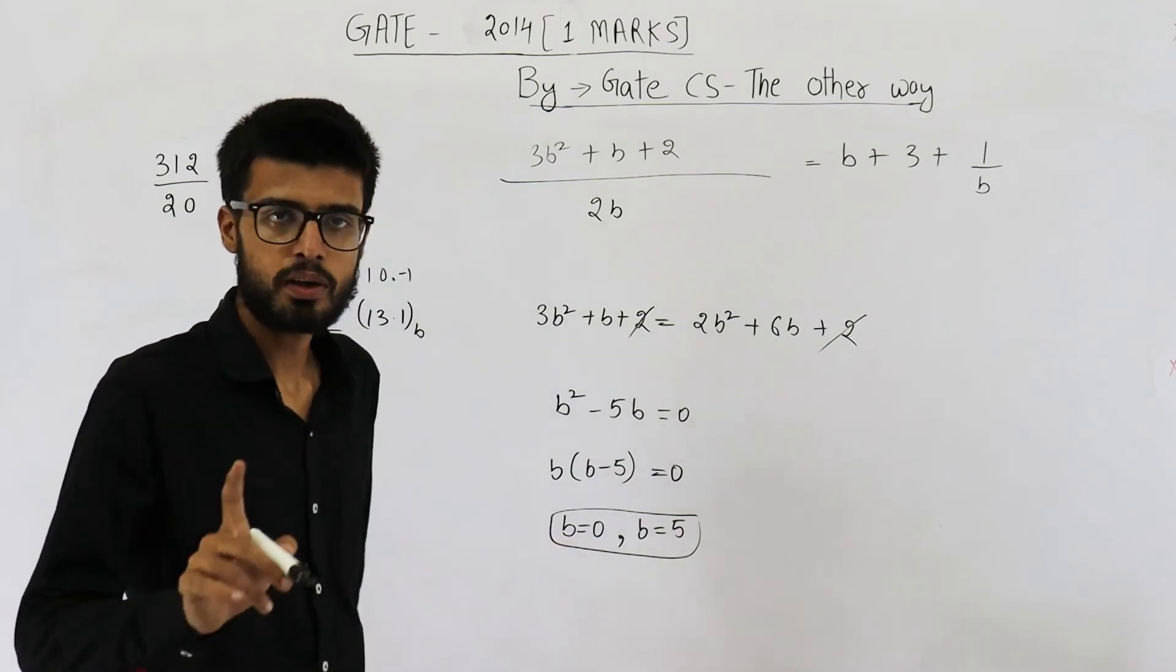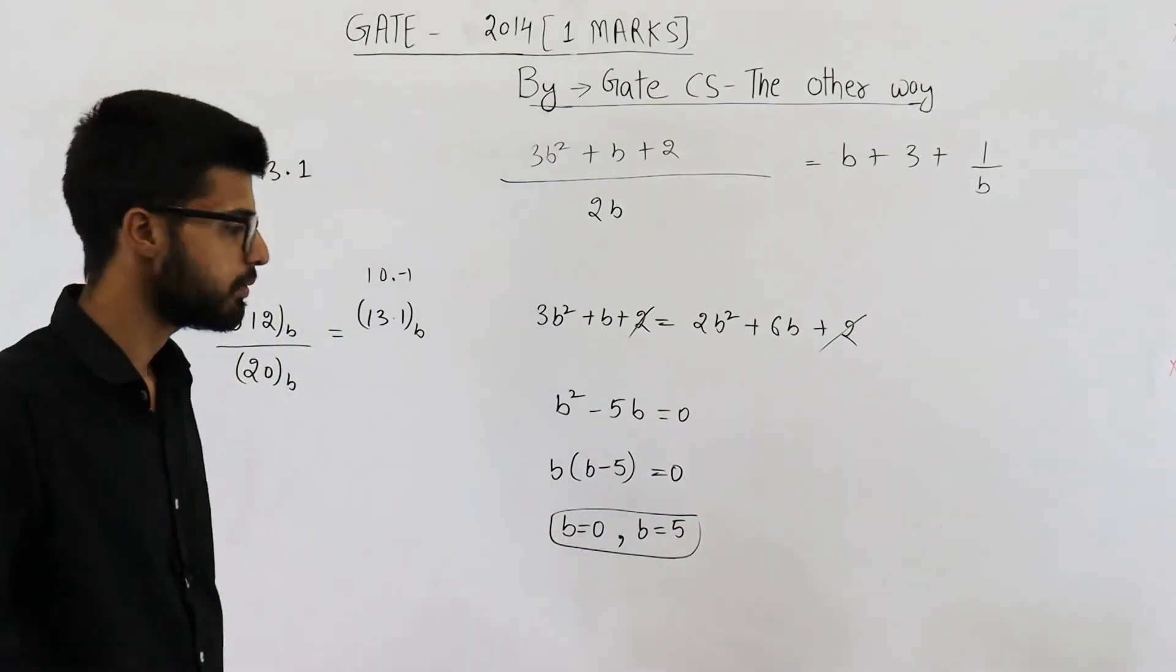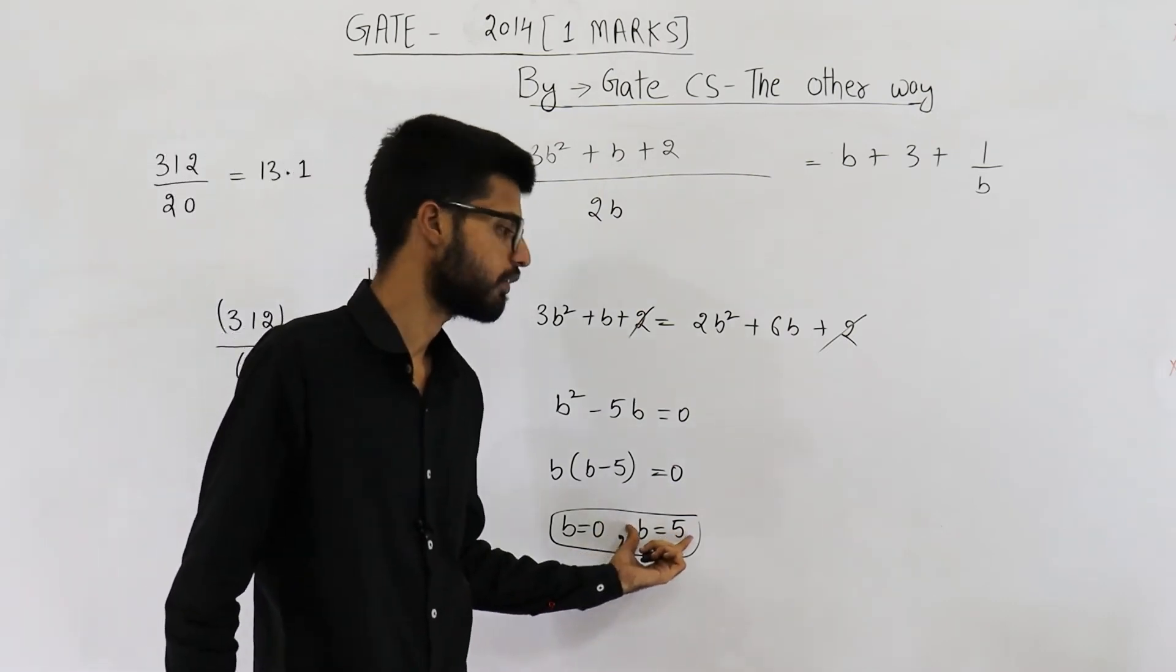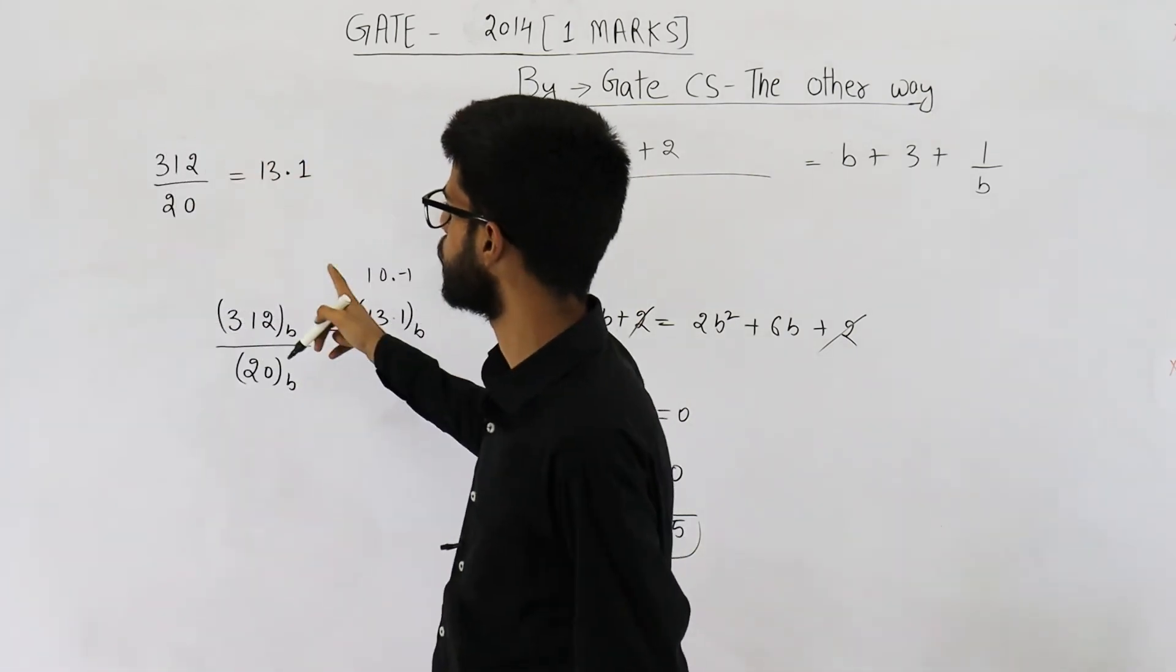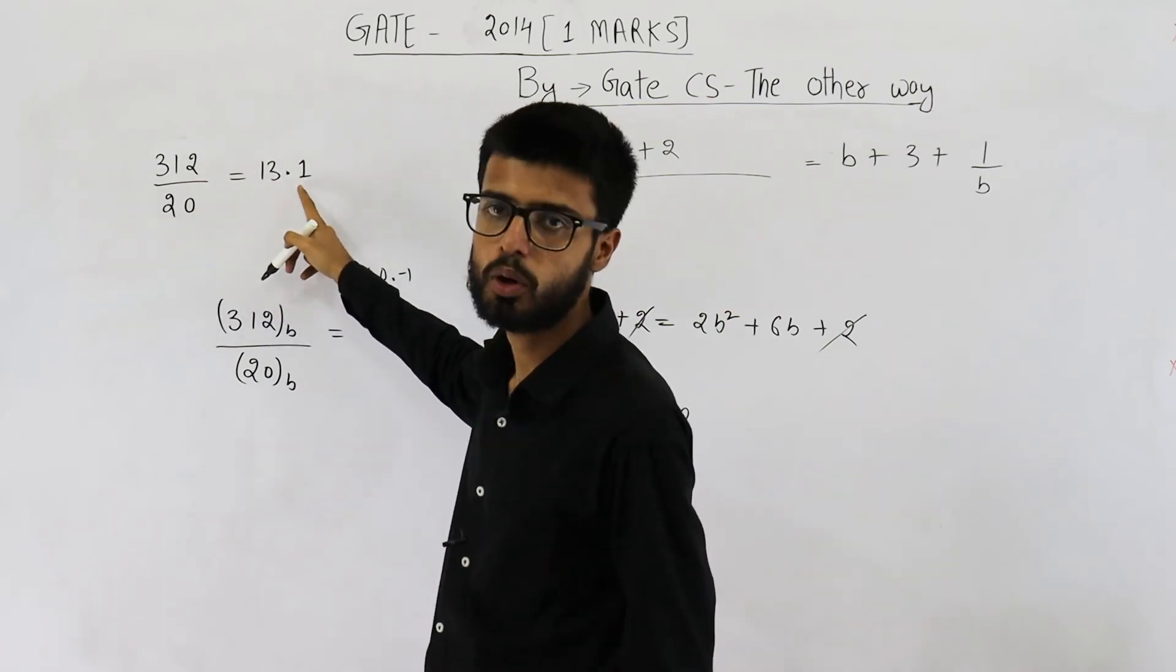b is equal to 0 is not allowed, because base of number system cannot be 0. The other value is 5. This is your answer. So in base 5, 312 divided by 20 will result in 13.1.